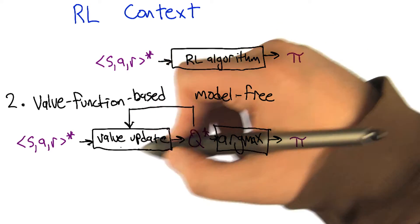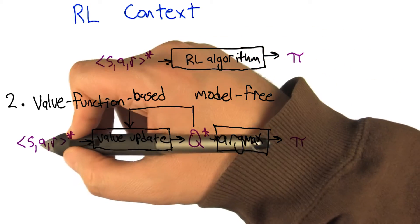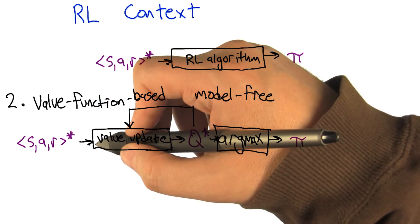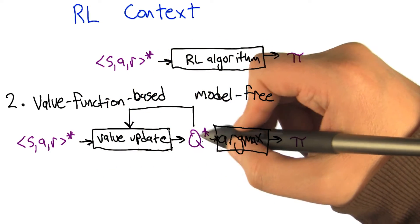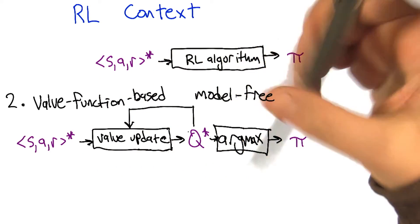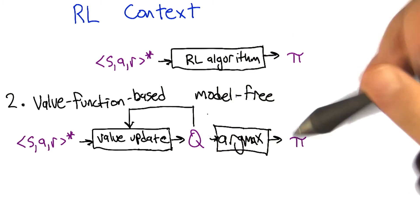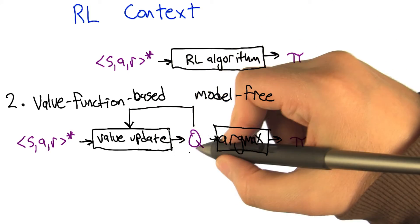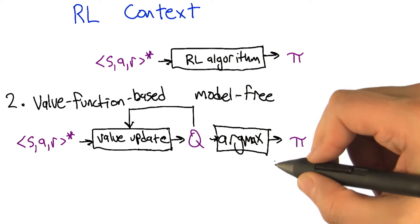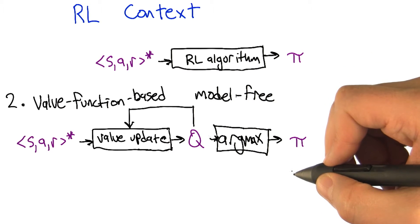But now instead of feeding back the transitions and rewards, we're actually feeding back Q star, and we have a direct value update equation that takes state action reward that it just experienced, the current estimate of Q star. Actually it's kind of more Q than Q star. And uses that to update and generate a new Q, which is then used to generate a policy.